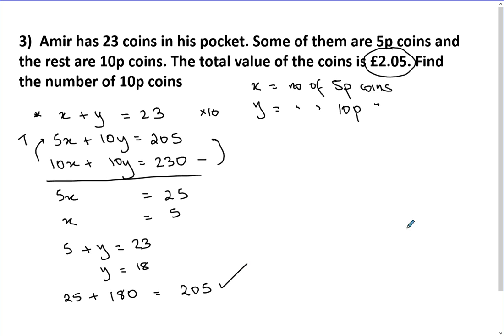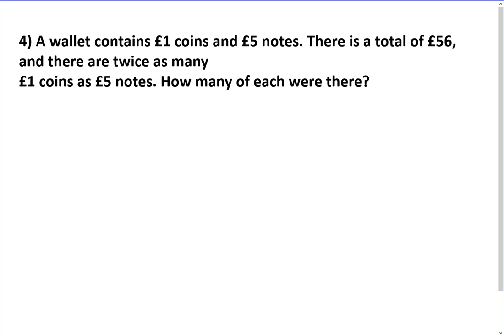I hope that was really easy. Let's do something a little bit different. I'll just underline that to tell you that there's a different way of doing it. So a wallet contains one-pound coins and five-pound notes. There's a total of 56, and there are twice as many one-pound coins as five-pound notes. How many of each were there?